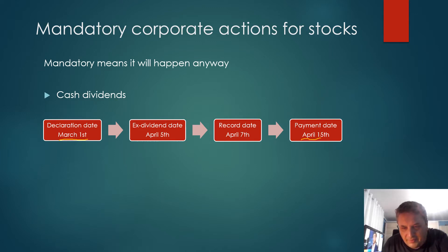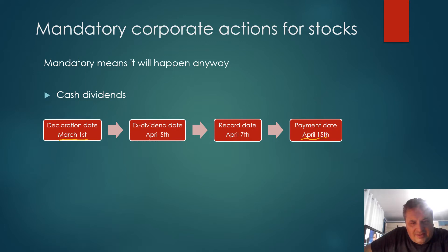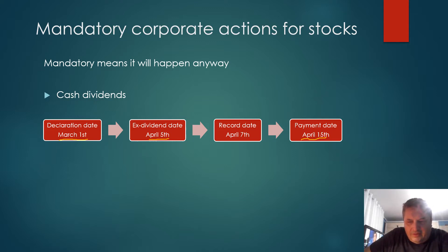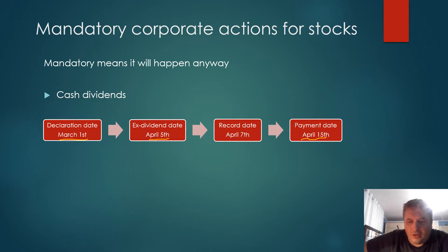Let's say a dividend is declared on March 1st. You will not get paid until April 15th. In between, on April 5th, the stock goes ex-dividend — this is the ex-dividend date. That means the stock opens lower, adjusted for the price of the dividend. So if the stock closed at $10 and the dividend is $0.50, the stock will open at $9.50 more or less, because the price is adjusted for the dividend. Then there's a record date.